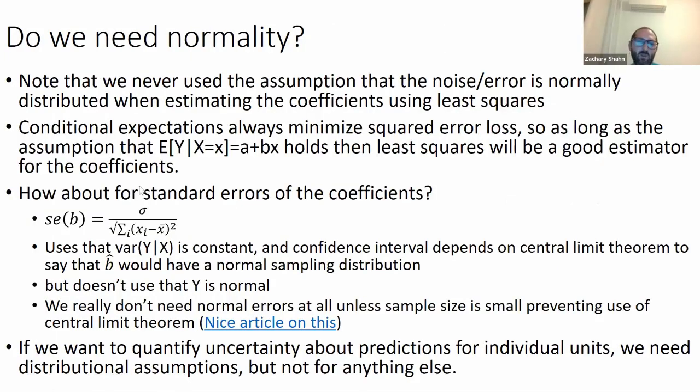One thing that's interesting is that in the least squares framework, we never use the assumption that the noise or error term is normally distributed. We just minimize the sum of the squared residuals. We never talked about a normal distribution at all. The conditional expectation always does minimize what's called squared error loss, the sum of the squared residuals. So as long as the assumption that the conditional expectation of Y, given that you observe X is a line, as long as that is actually true, then least squares would be a good estimator for the coefficients. So you really don't need normality at all for finding the right A and B.